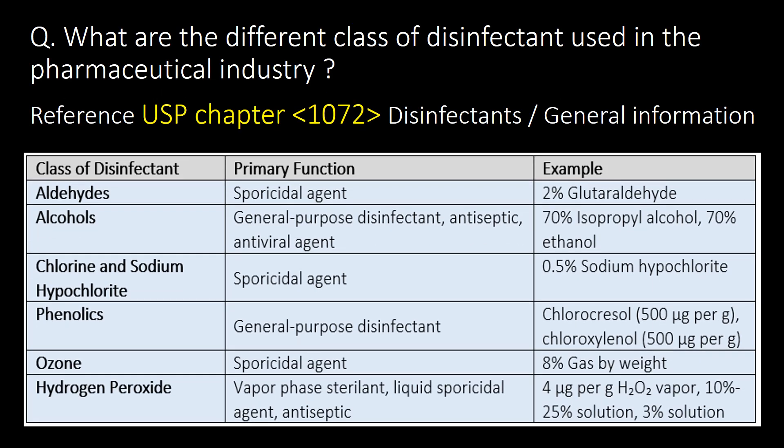What are the different classes of disinfectants used in the pharmaceutical industry? You can refer to the table for different classes of disinfectants as per USP Chapter 1072. The important classes are aldehydes, alcohols, chlorine and sodium hypochlorite, phenolates, ozone, and hydrogen peroxide.